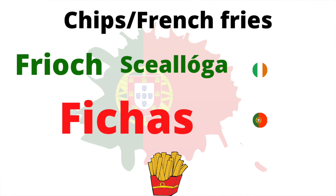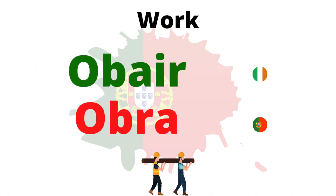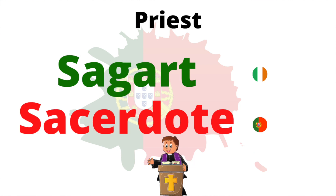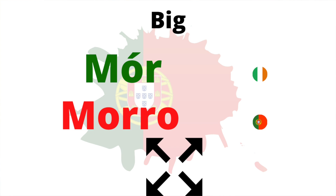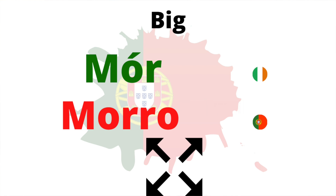The verb in Irish meaning to work is obair, and in Portuguese obra. A priest in Irish is sagart, and in Portuguese sacerdote. In Irish, mór means big, and in Portuguese the word morghul — while not necessarily meaning big or large — can mean to swell or enlarge.